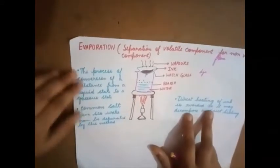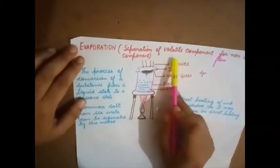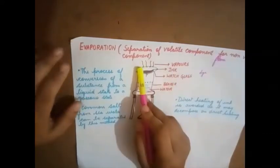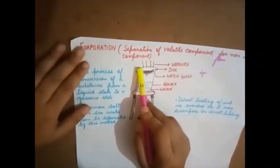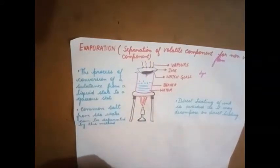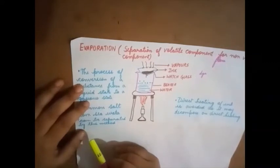First one is evaporation: separation of volatile components from non-volatile components. This evaporation technique is used to separate volatile components. What do I mean by volatile components? Those which can evaporate easily. We are trying to separate volatile components from non-volatile components, that means components that cannot evaporate easily.